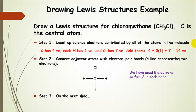Let's go ahead and draw a Lewis structure for chloromethane. For this molecule, carbon is the central atom. Let's count up all the valence electrons contributed by the atoms in the molecule. Looking at our periodic table, we see that carbon has four valence electrons. Each of the three hydrogens has one. And chlorine has seven. If we add them up, we get 14 valence electrons total.